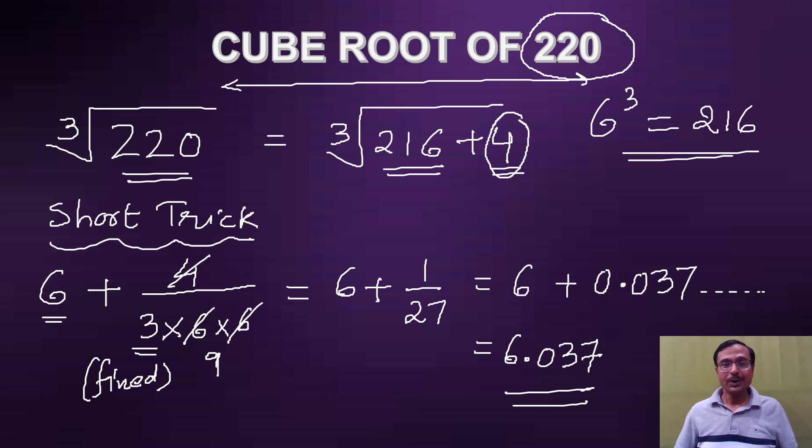I would surely love to see you find out the logic behind this method, the short trick which I've just told you. Remember, only an approximate value of the cube root will be found out. For this cube root of 220, I think 6.037 is a very good approximation. So just test the result and let me know in the comment section what you understand by this trick.